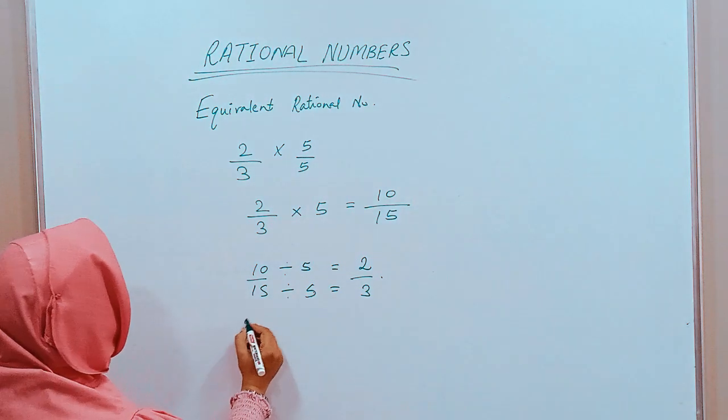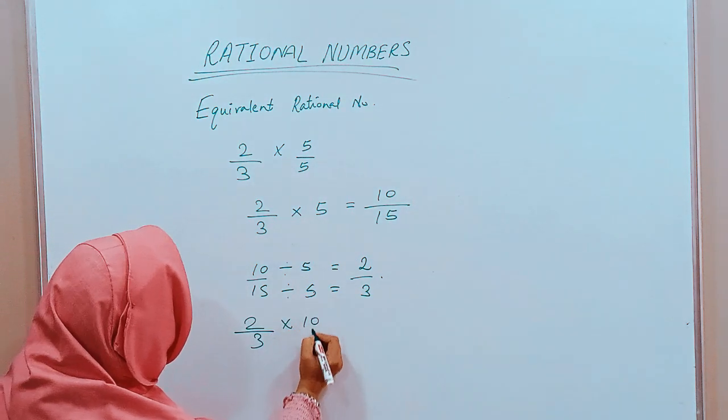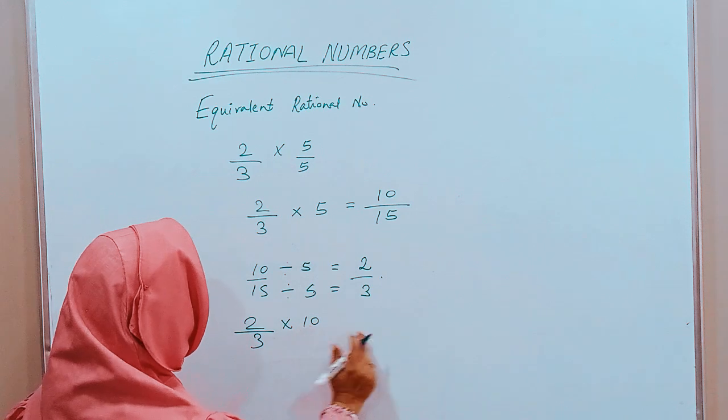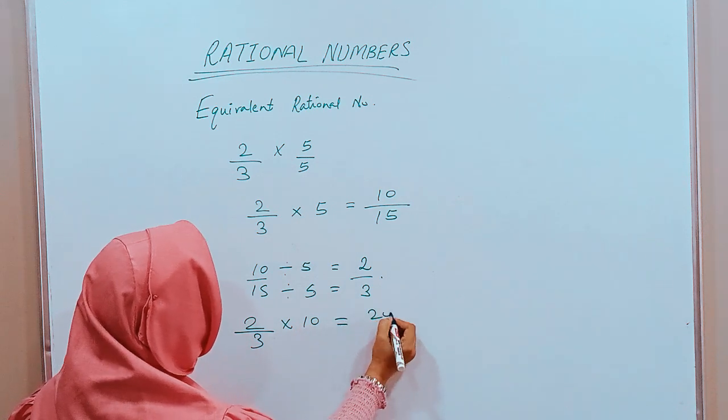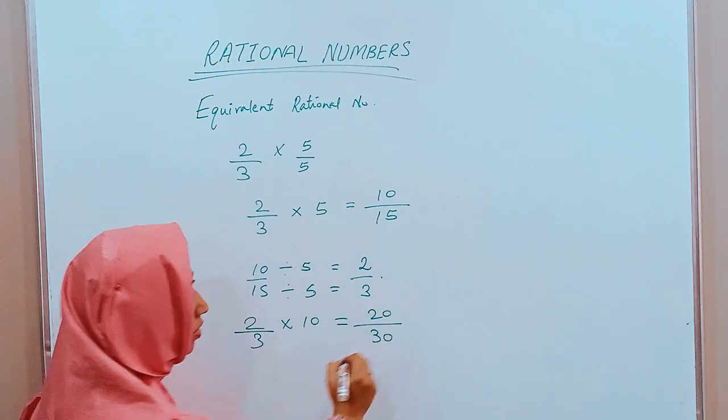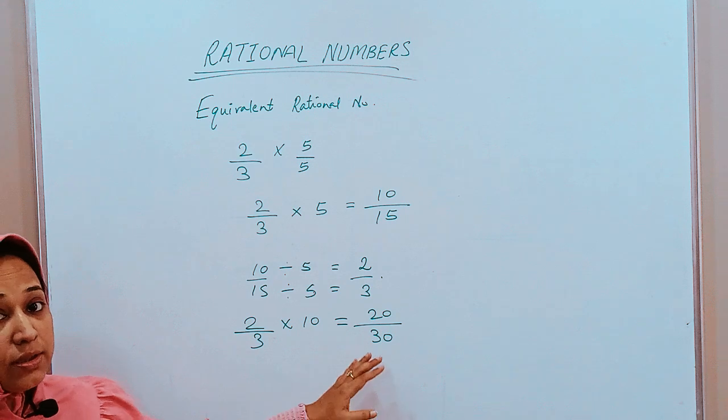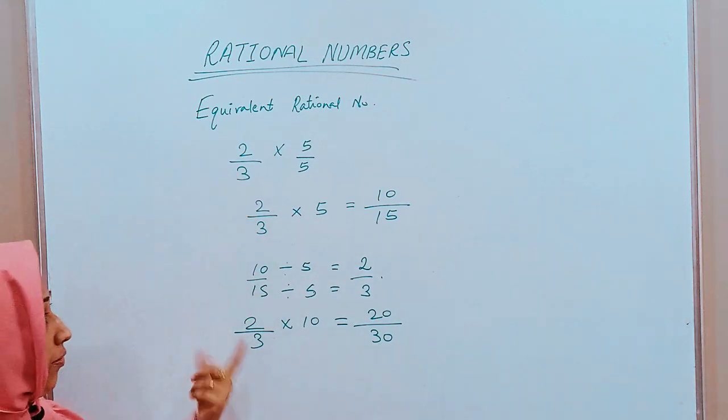Now, let us multiply 2 by 3 with 10. So, 2 into 10 is 20, 3 into 10 is 30. So, 20 upon 30 is also equivalent to 2 upon 3.